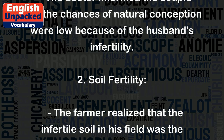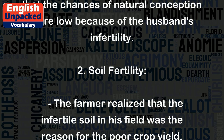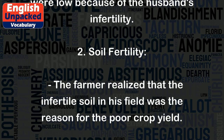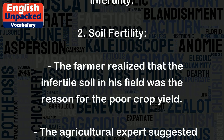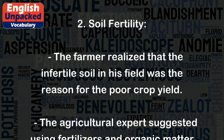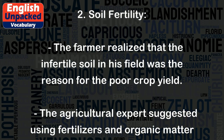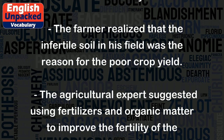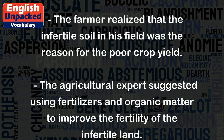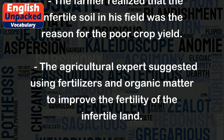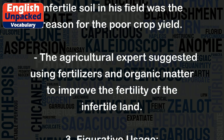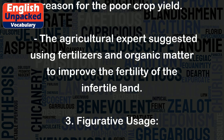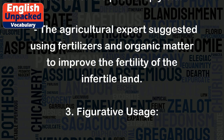2. Soil Fertility: The farmer realized that the infertile soil in his field was the reason for the poor crop yield. The agricultural experts suggested using fertilizers and organic matter to improve the fertility of the infertile land.